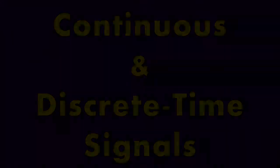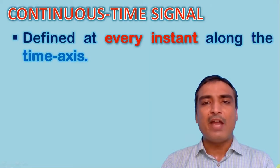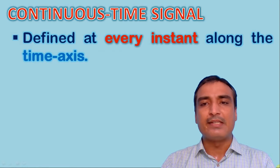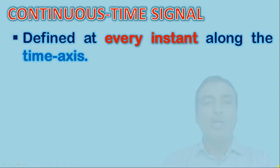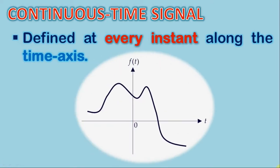A signal which is defined at every instant along the time axis is known as a Continuous Time Signal. For example, look at this illustration. You may see that at every instant along the time axis, the signal does assume some value. So this is a Continuous Time Signal.